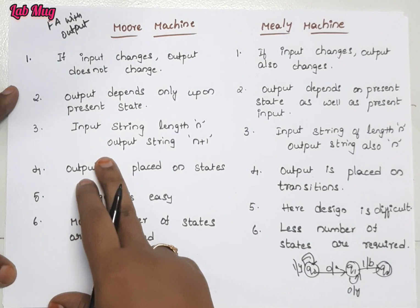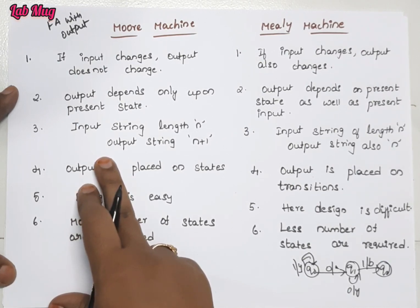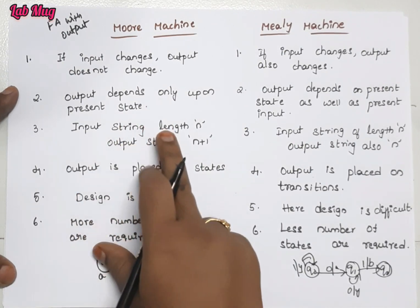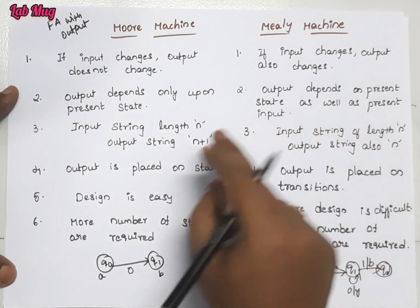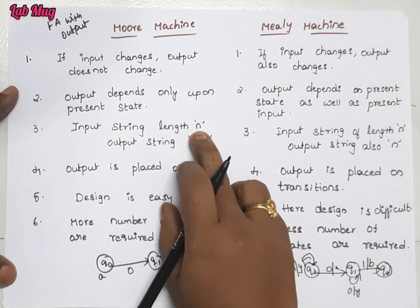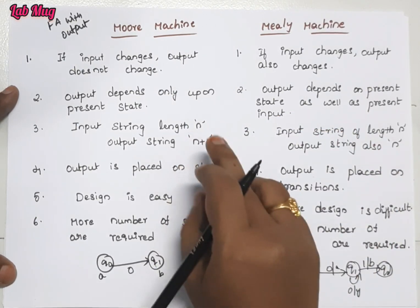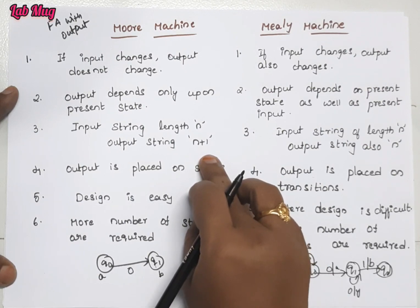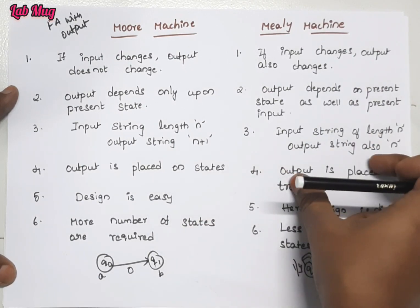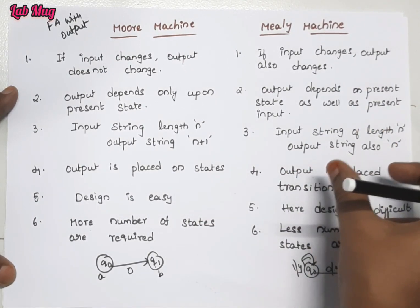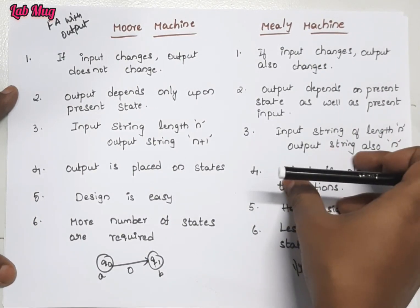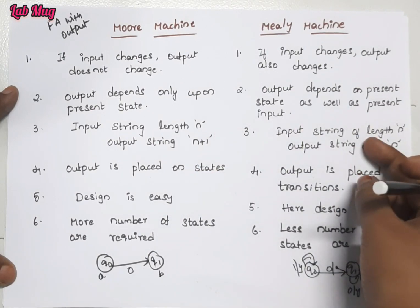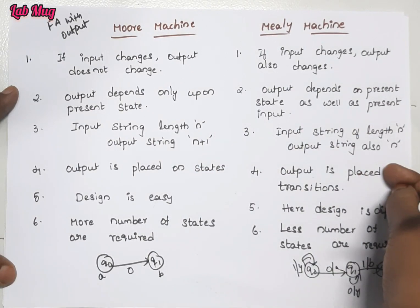The next difference: as discussed in the previous Moore machine class, if the input string is '1001' with length 4, the output string length is 5 — that is n+1. But in Mealy machine, if the input string length is 4, the output string length is also 4 — that is n. So the main formula difference is: Moore machine gives n+1 output length, Mealy machine gives n output length.